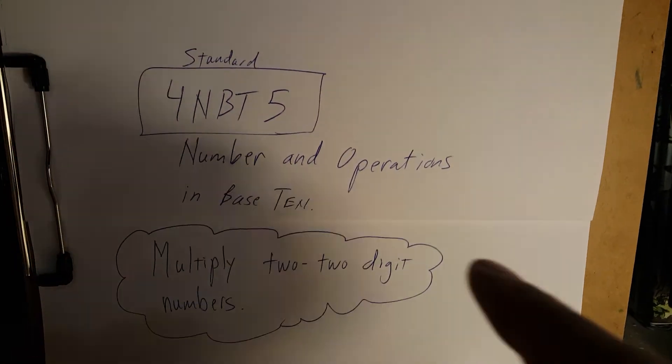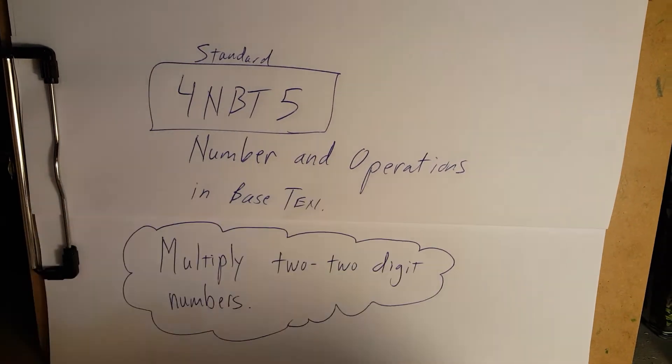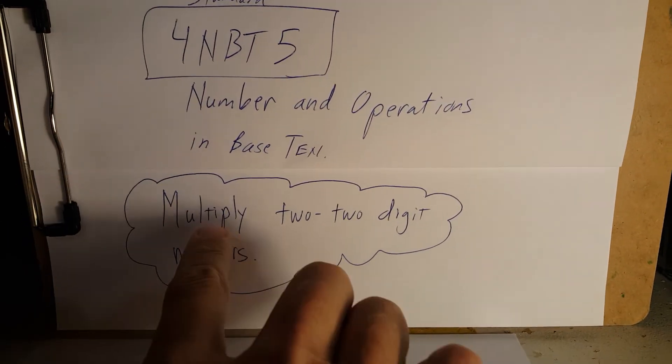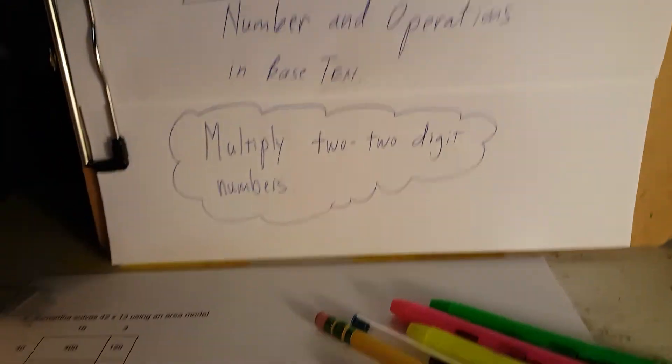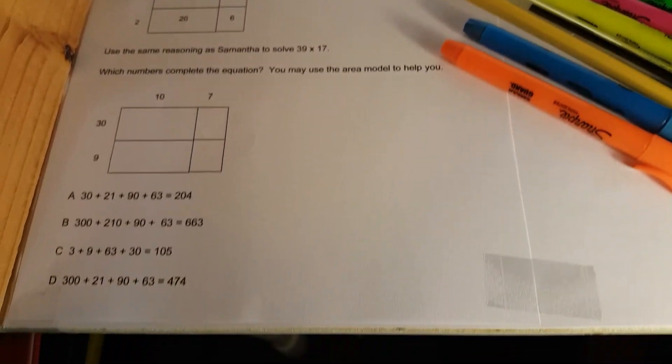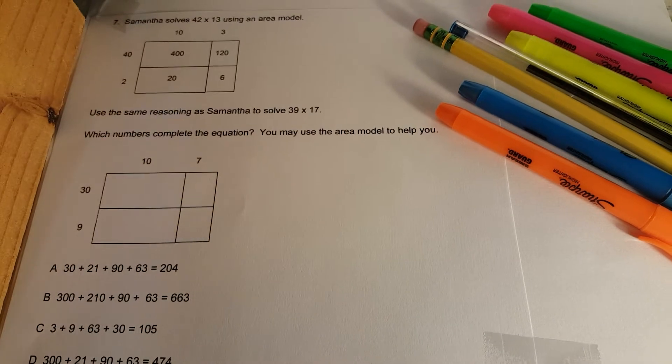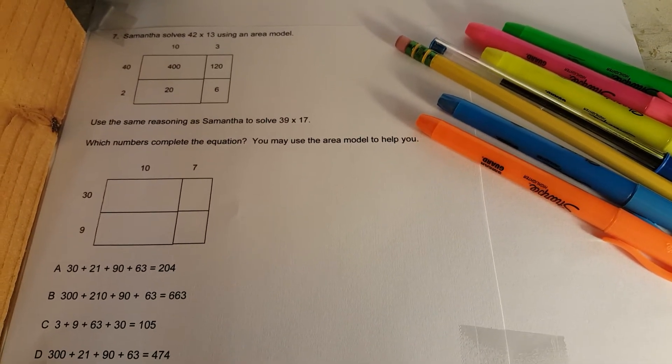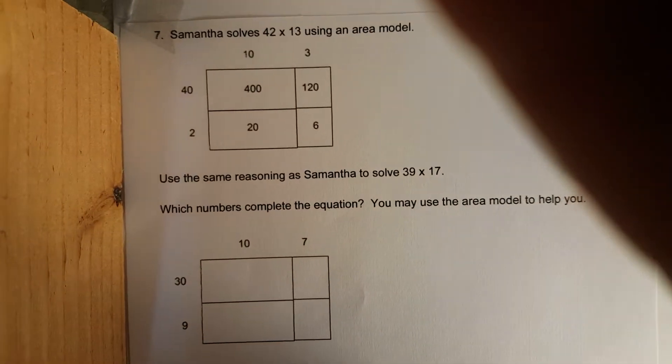Welcome back to standard form BT5, numbering operations in base 10. We're still multiplying two two-digit numbers. Here's a problem, this is number seven. Check this out, this one is long, takes up more than half a page. This is gonna take forever, or maybe it won't. Let's just start.